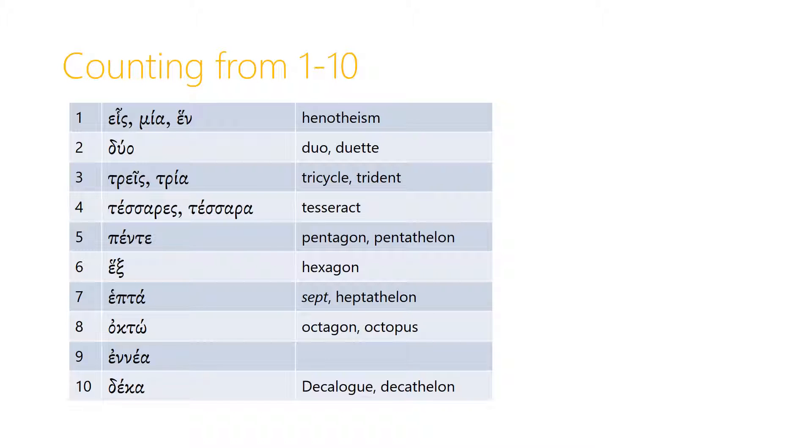The number eight is octo, and this is where we get the words like octagon or octopus, which literally means eight foot.